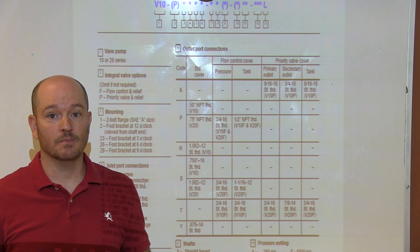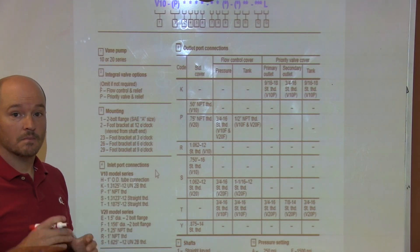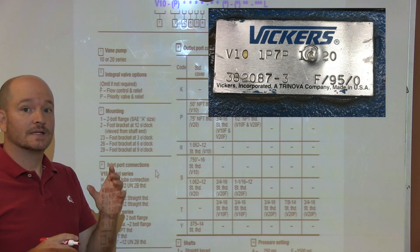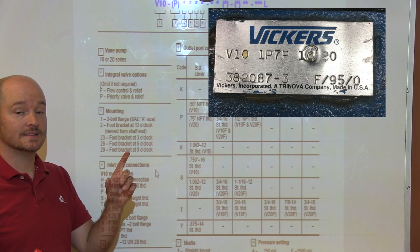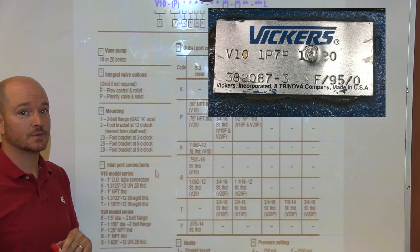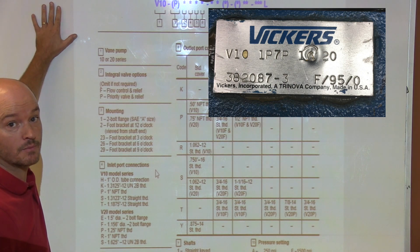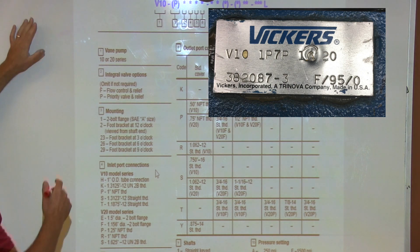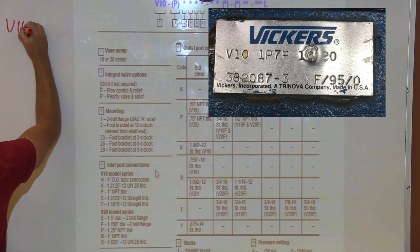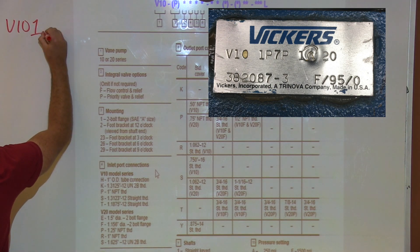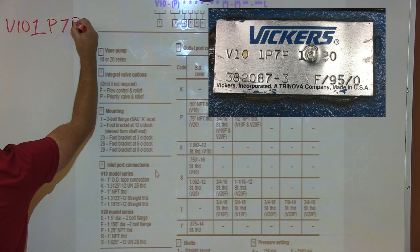So let's go ahead and get started. Here's a picture of the model number taken off the nameplate of the hydraulic pump, and I'm going to write this down so we can use this as we begin to break it down. I don't want to write it here, I want to write it off to the side so I can break it down as we move by. This is V10 1P7P.